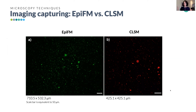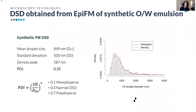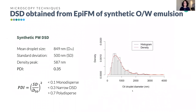We moved into post-processing: starting with the original image we took specific steps until we had a final image from which we could calculate the diameter of each identified droplet and the droplet size distribution. For the synthetic produced water, we calculated the polydispersity index based on mean droplet size and standard deviation, obtaining a value of 0.35 — indicating a relatively narrow distribution.